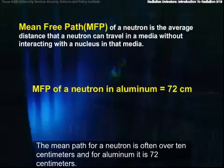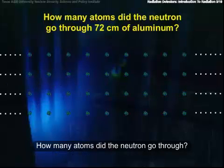The mean path for a neutron is often over 10 centimeters and for aluminum is 72 centimeters. How many atoms did the neutron go through?